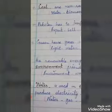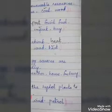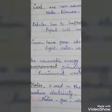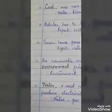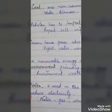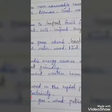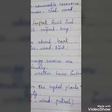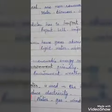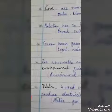Number 6: Dash is used in the hydro plants to produce electricity. Options: water, gas, wind, petrol. The correct option is water.